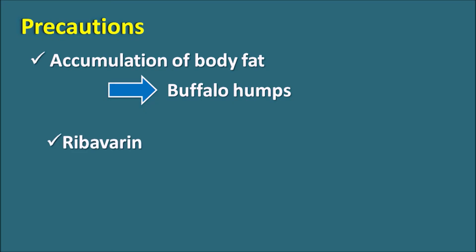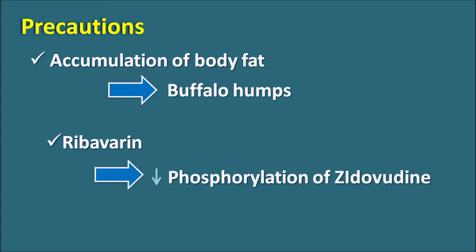Ribavirin, an antiviral agent used to treat hepatitis C infection, can inhibit the phosphorylation of Zidovudine. Since phosphorylation into the triphosphate form is an important activation step for Zidovudine, ribavirin can reduce the action of Zidovudine and may result in treatment failure. Care should be taken when Zidovudine is given along with ribavirin.